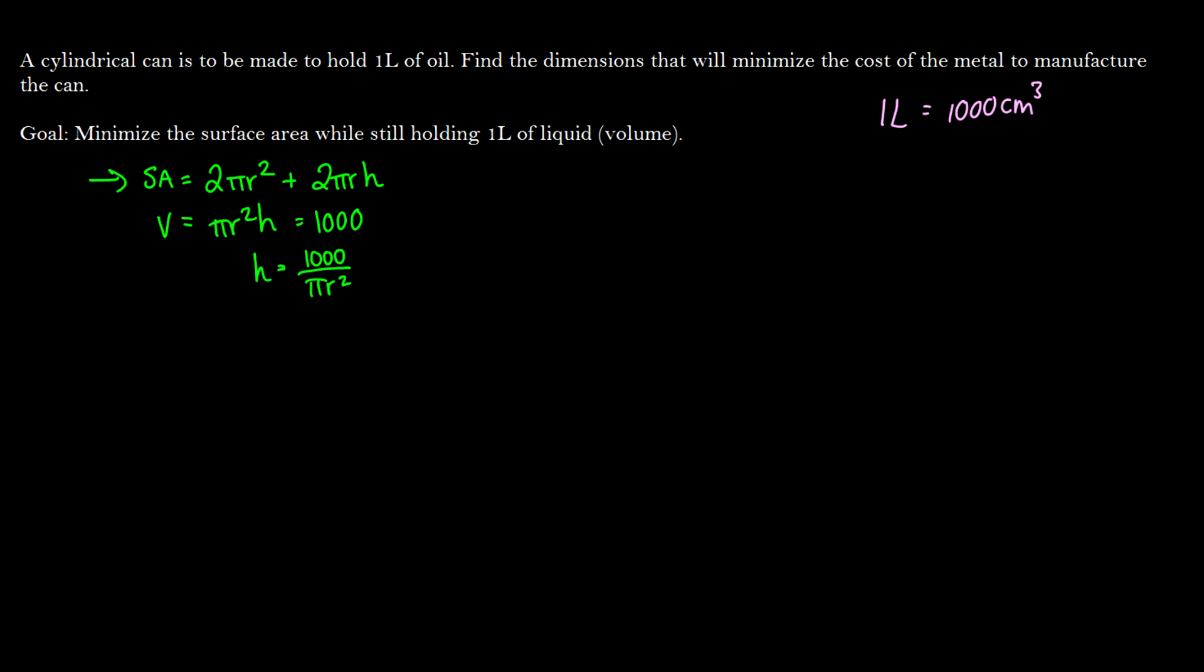I know this looks a little bit confusing, but don't worry, this isn't going to be too bad. Now we'll substitute h in our surface area. So 2 pi r squared plus 2 pi r times 1000 over pi r squared. So we can rewrite this as 2 pi r squared plus 2000 over r when we do some canceling.